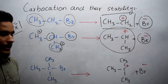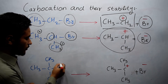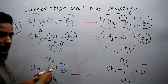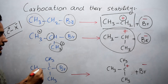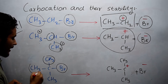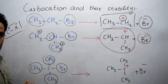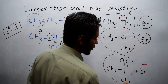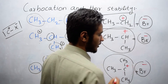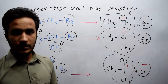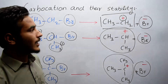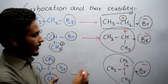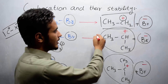Tertiary alkyl halide has bromine attached to a tertiary carbon atom — a carbon attached to three alkyl groups. On giving energy to this compound, it produces a tertiary carbocation plus Br⁻.